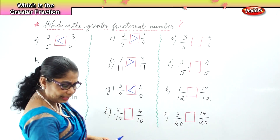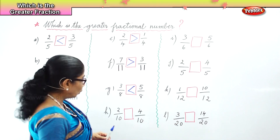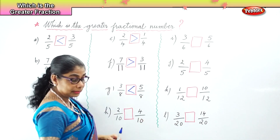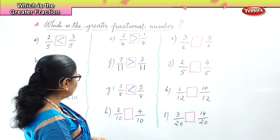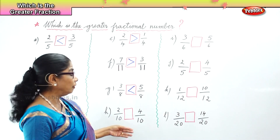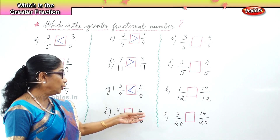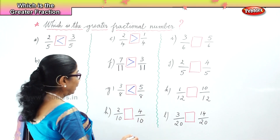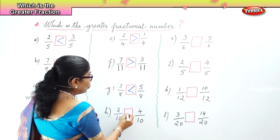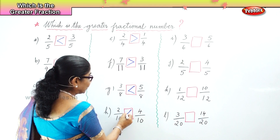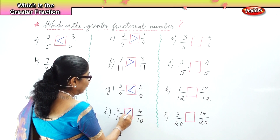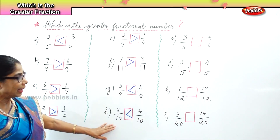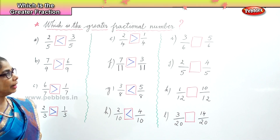In the next sum we have ten as the denominator — two by ten and four by ten. We know the numerator four is bigger than two. So four by ten is greater than two by ten.